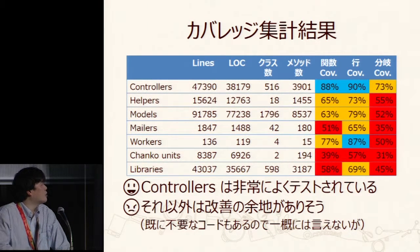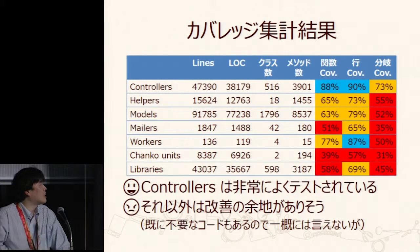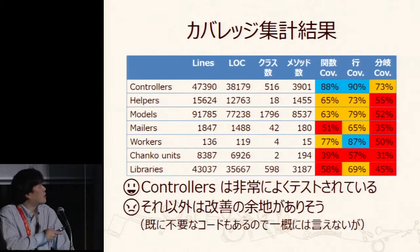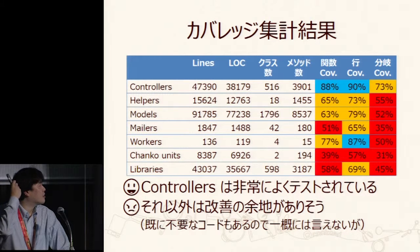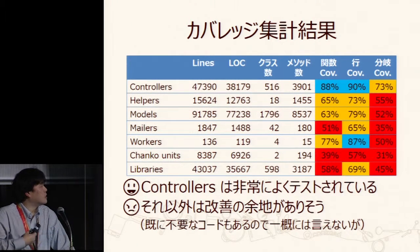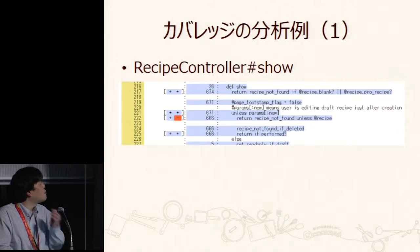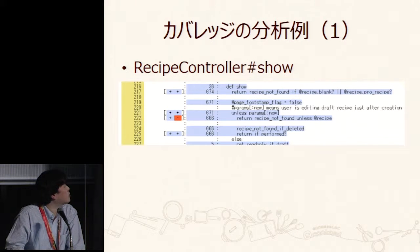Coverage value — how much should be good enough? It's a difficult question to answer. Depending on the concept of implementation, sometimes we say that if it's above 84%, it's reasonable. The controller is often tested rather well, but other areas may need improvement.